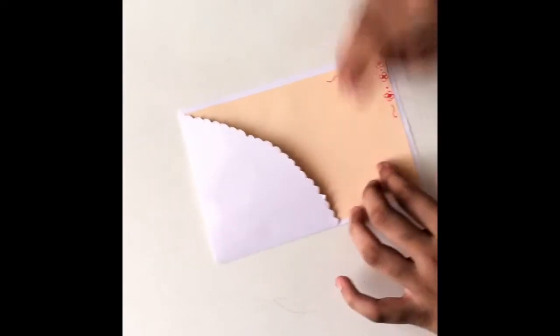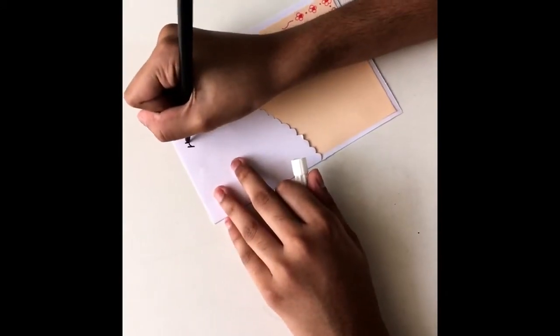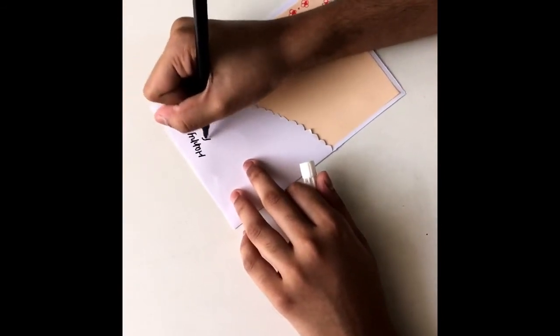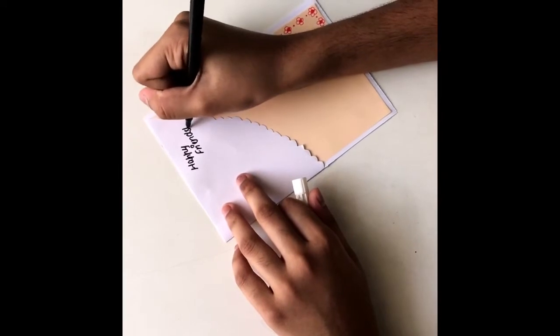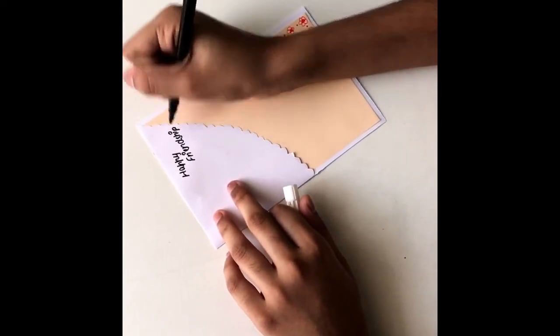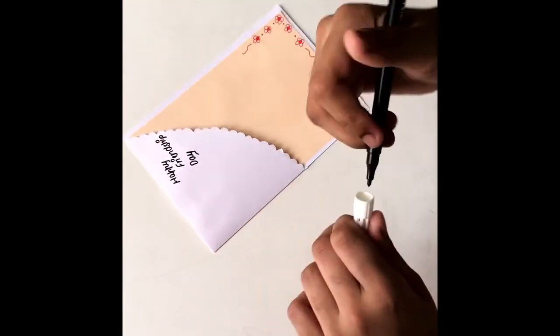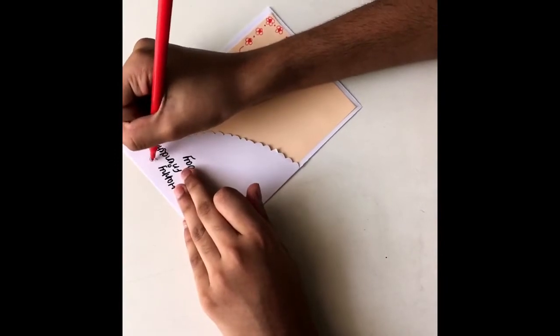Now it's cutting time. So now I have cut it. You can do with a special scissors or a normal scissors. Now take a black sketch pen and write 'Happy Friendship Day'. Now take a red sketch pen and draw some hearts.